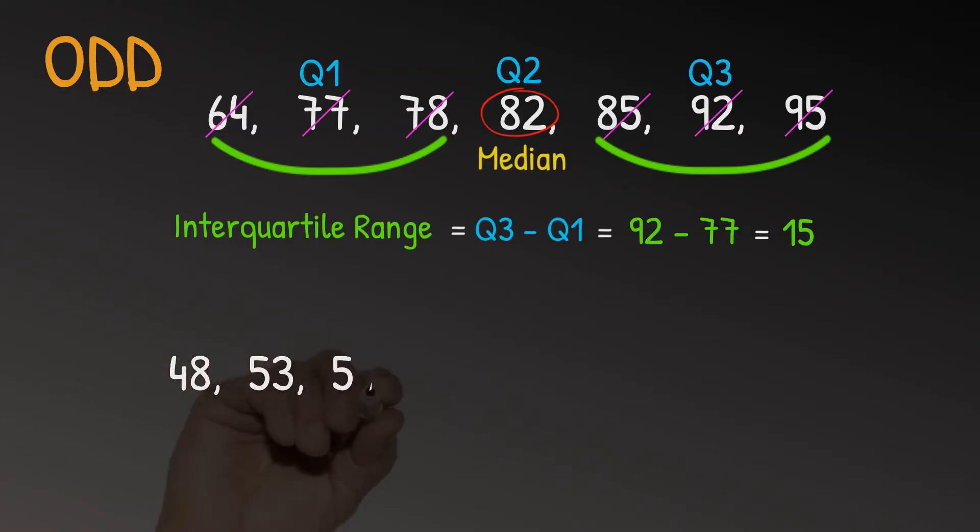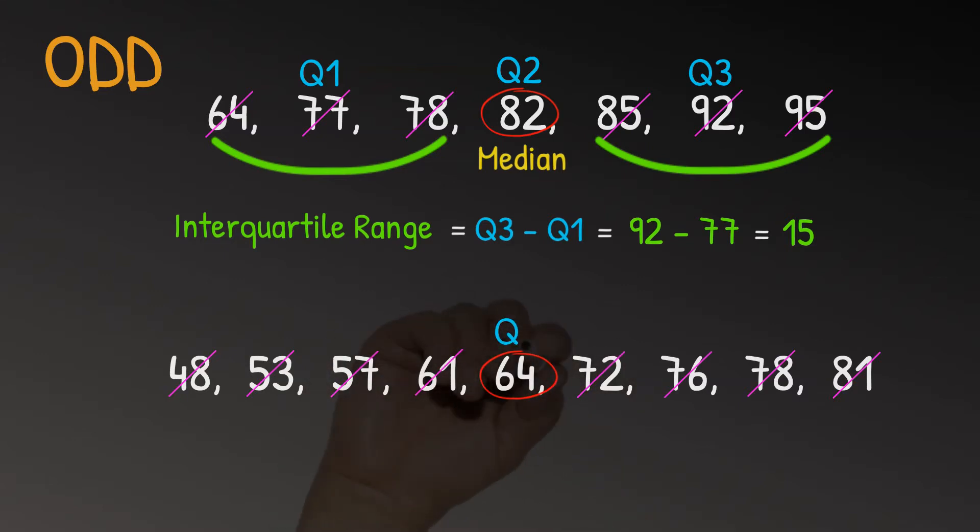Now that was with a data set that had seven values. So let's try another data set. This time it has nine values. So with this case, we have a different scenario. Again, if we cross off all the numbers from either end, we do get to the number in the middle, which is 64. So again, we found Q2 or our median fairly easily.